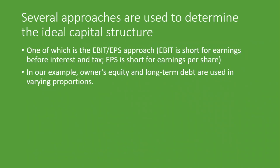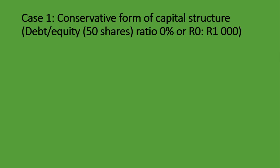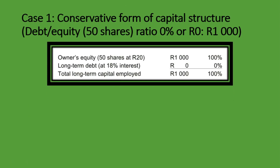Let's take a look at the first example — Case number one, the conservative form of capital structure. Our debt-to-equity ratio is 0 to R1,000. That means we have 0 debt and equity worth R1,000, comprising 50 shares at R20 each. The weighting is 100% equity because we have no debt at all. Long-term debt is at 18% interest, but we have none, so it's 0%. Total long-term capital employed is R1,000 at 100%.